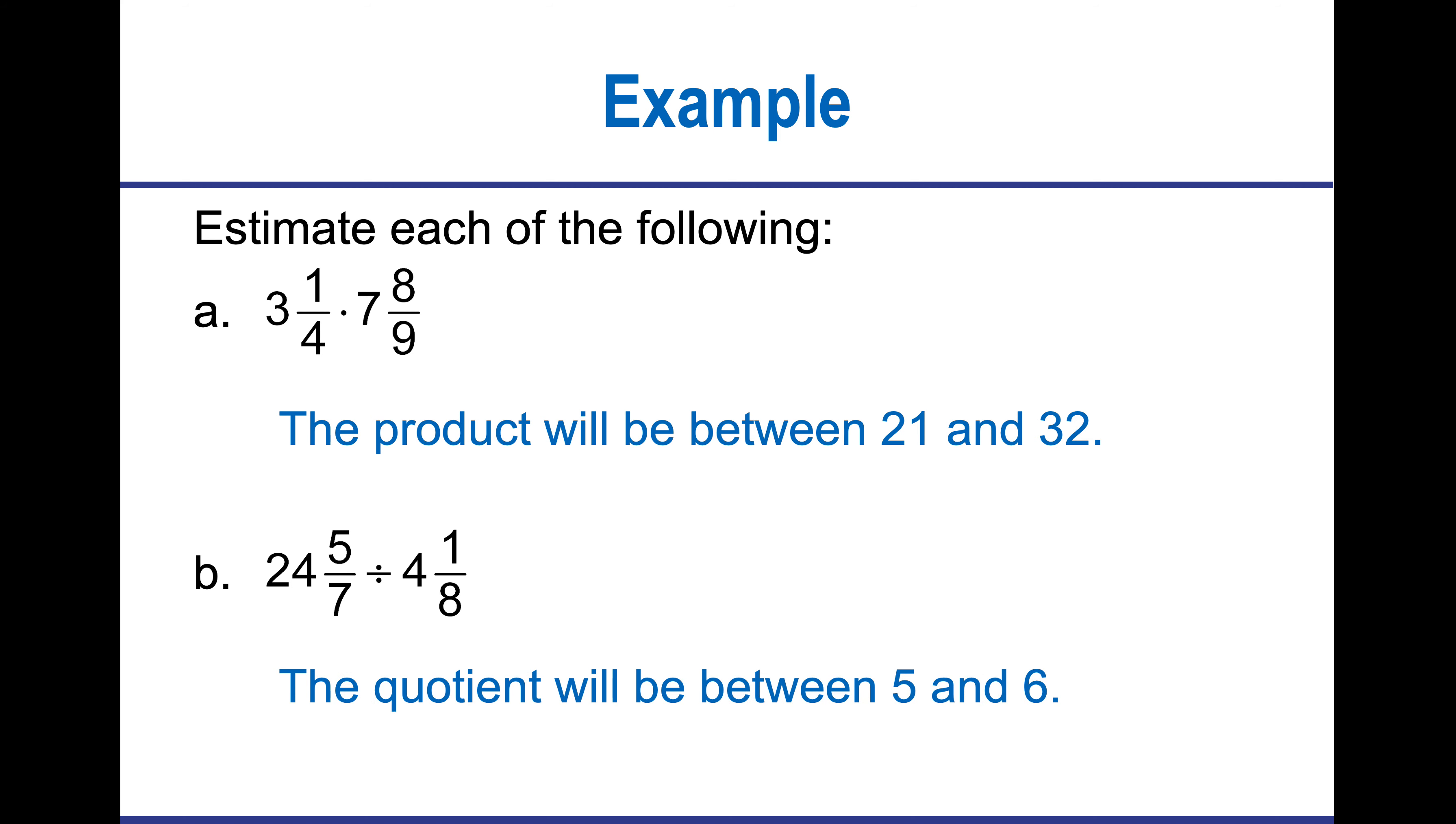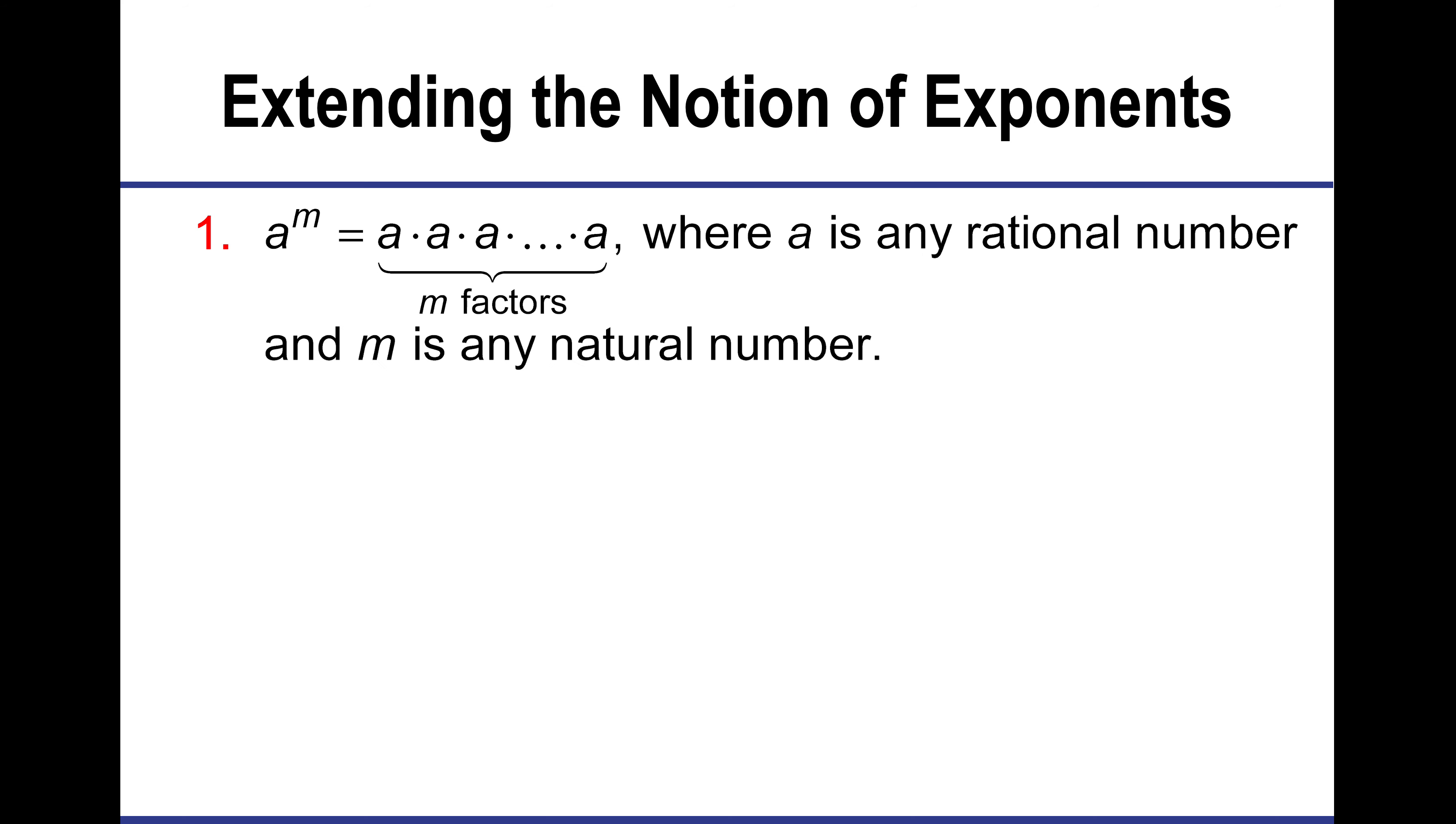In part B, if I'm looking at this division quotient, I can see that 24 and 5 sevenths is probably, we could round down to 24 divided by 4, which is going to give me 6. I could also work that out as 24 divided by 5 or 25 divided by 5, which would be 5. So I'm looking at something somewhere between 5 and 6. It's just looking at rounding whole numbers here.